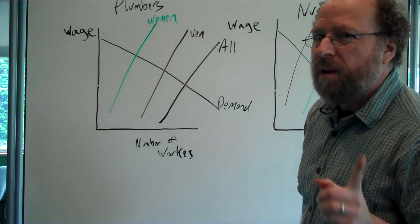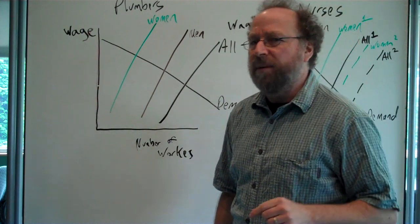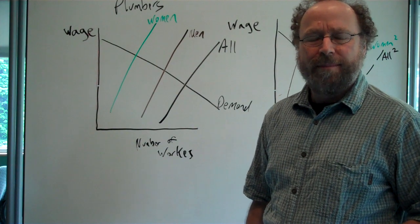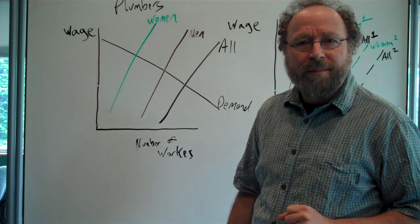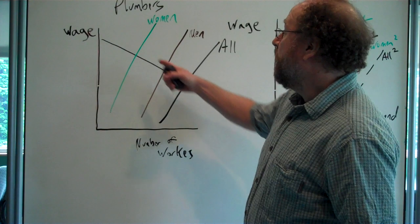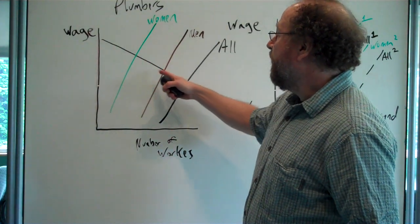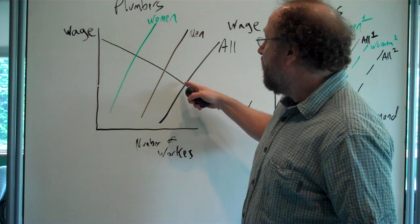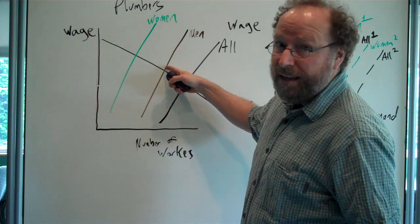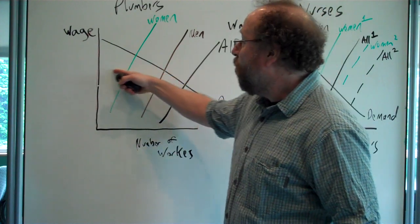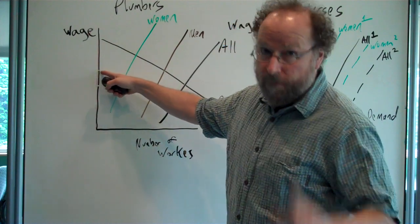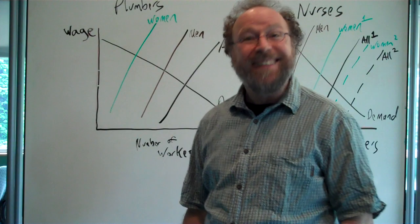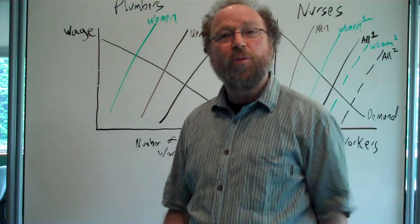What happens if the plumbers, the male plumbers decide they don't want women around? Why would they do this? Good reason. Get rid of the women. Only men are allowed to be plumbers. Labor supply goes from this to the male labor supply. And wages for plumbers, for male plumbers, go up. They think that's great. They're making more money.